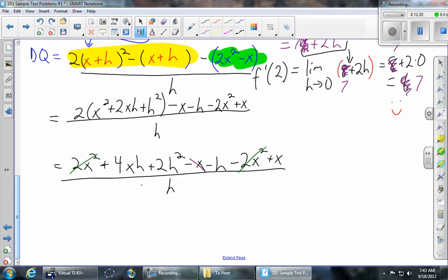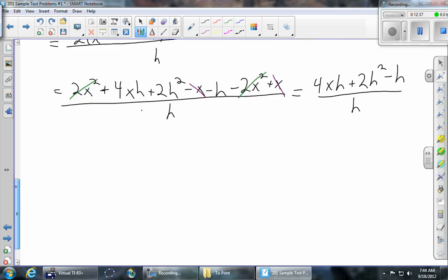And lo and behold, the only terms that are left over all have h. So we'll copy them. 4xh + 2h² - h. I think we've got all of them this time. And then we're almost ready to cancel that troublesome h in the bottom. First, we factor h out of all the terms upstairs. And then we cancel the h's. And we're left with just the stuff in the parentheses: 4x + 2h - 1.